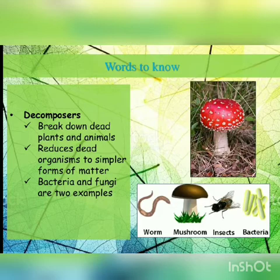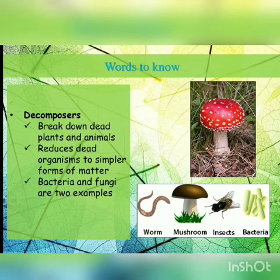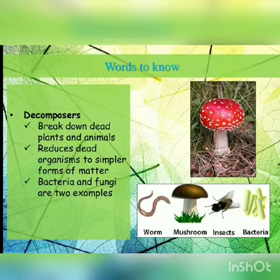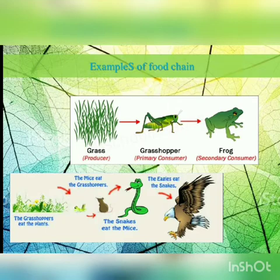Decomposers break down dead matter into simpler forms, that is nutrients, and these nutrients are used by plants for their healthy growth. So we have now learned a total of six key words.